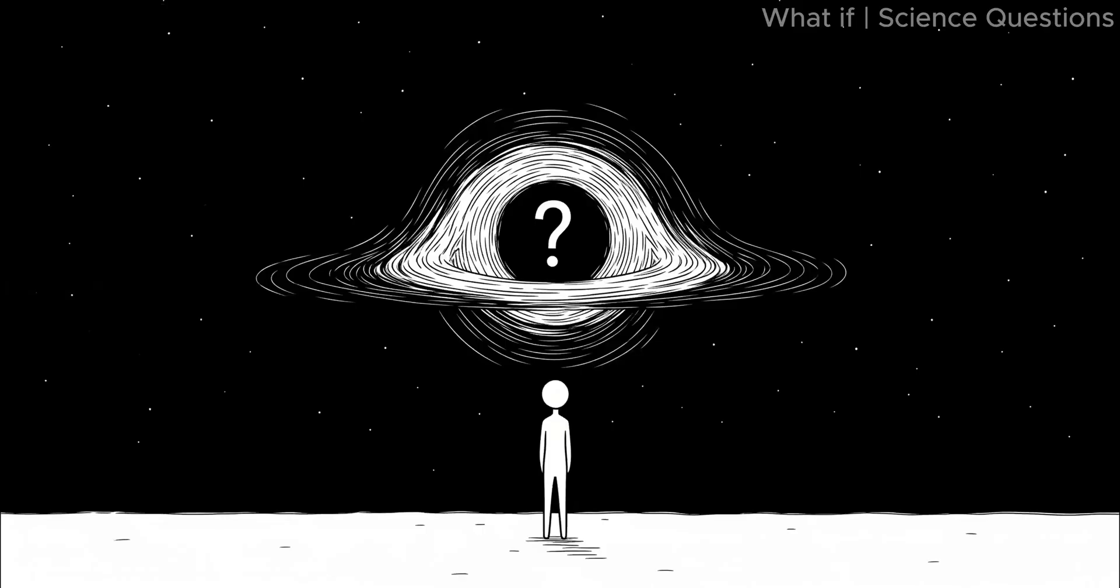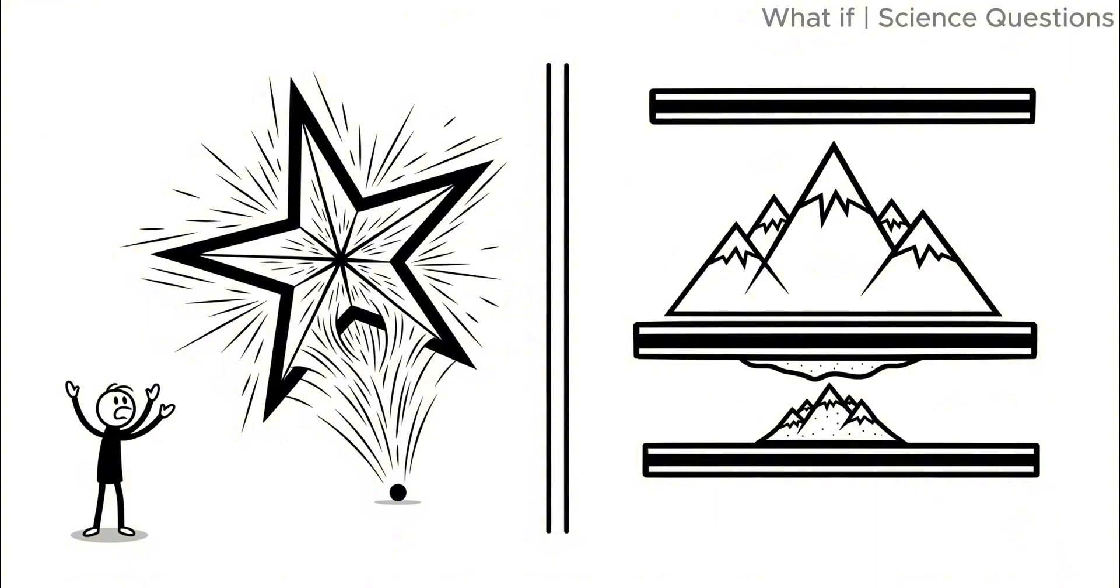Black holes are the most mysterious objects in the universe. They form when a massive star, at least 20 times heavier than our sun, reaches the end of its life and collapses under its own gravity. To put this into perspective, imagine squeezing Mount Everest into a grain of sand. That's still less dense than a black hole.